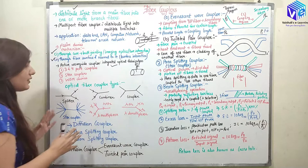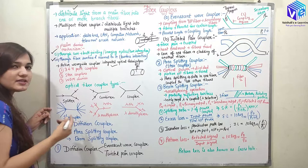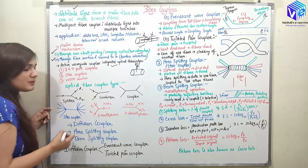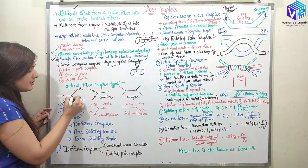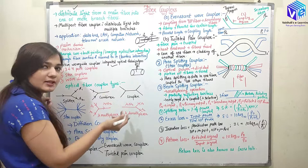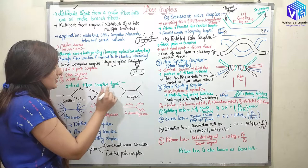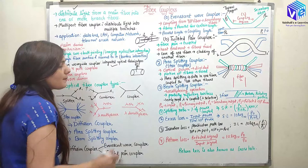Optical fiber couplers are of different types. We can have splitters — if I want to transmit the signal from one direction into two directions, for two receivers, I use a splitter. The splitter splits the same signal into two fibers, so power becomes half. A combiner combines two signals — from two transmitters, if I want to send the signal to a particular receiver, I use the combiner.